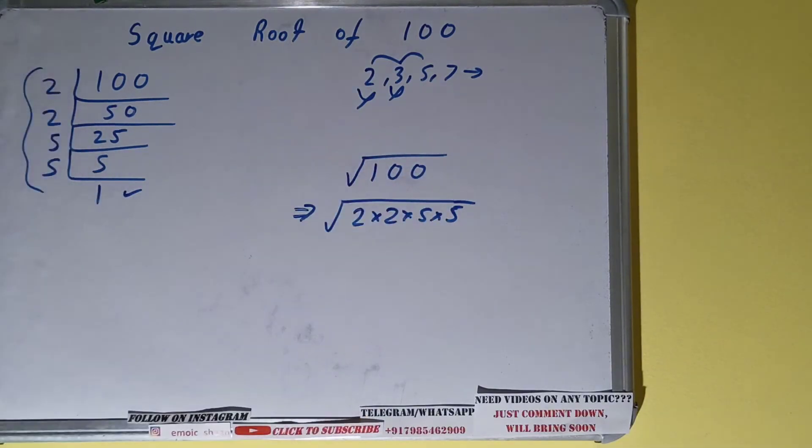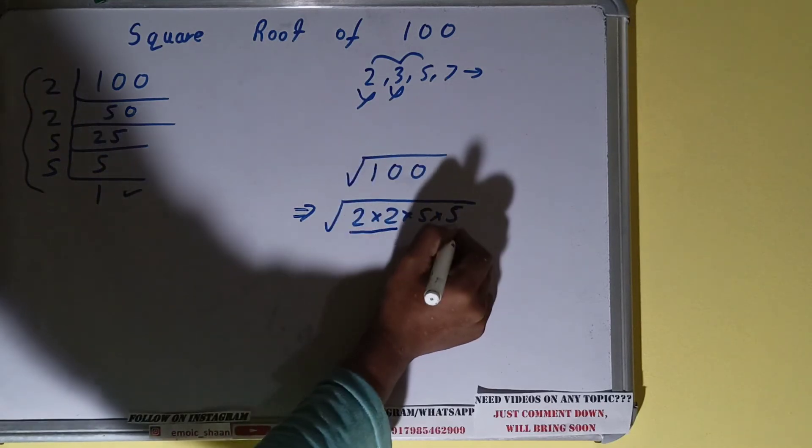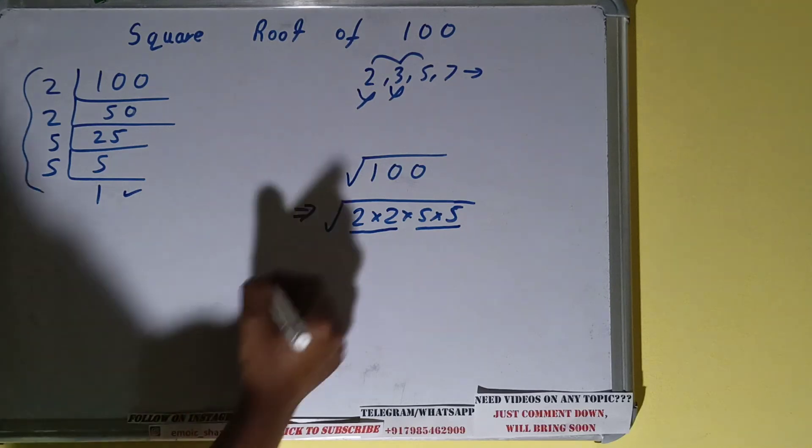Now the next thing you need to do is mark pairs, or you can say underline the pairs you can locate. Pair is basically the set of same numbers. So you have one pair over here—pair of 2—and one pair of 5.